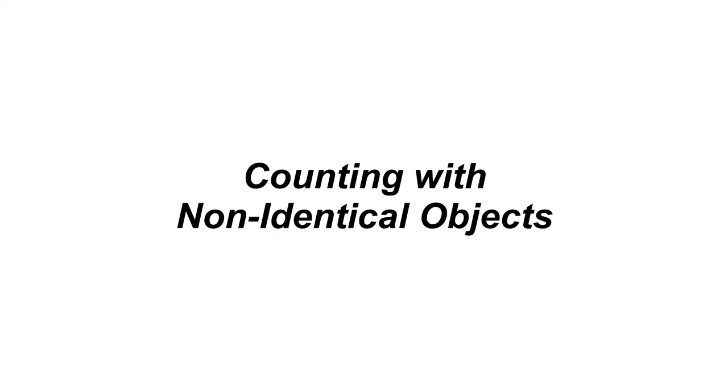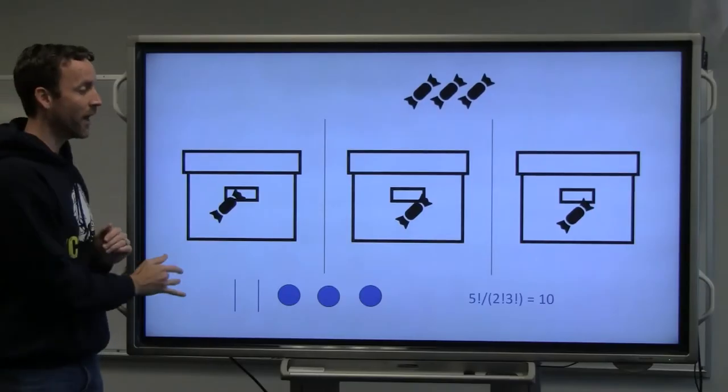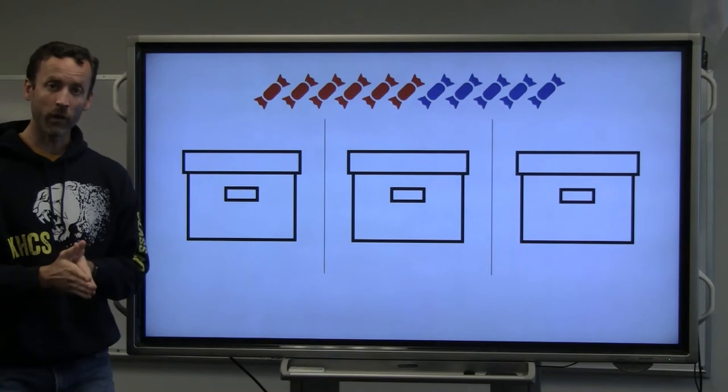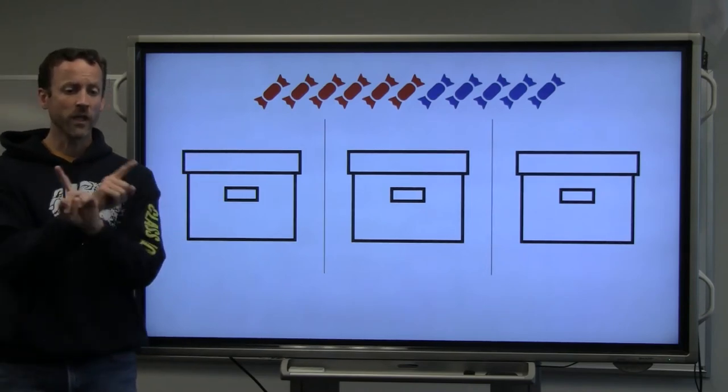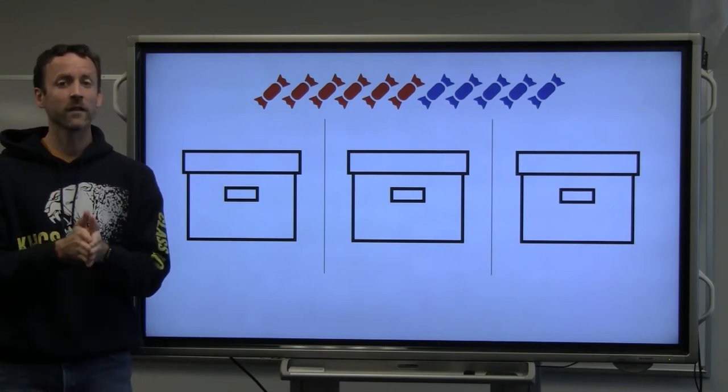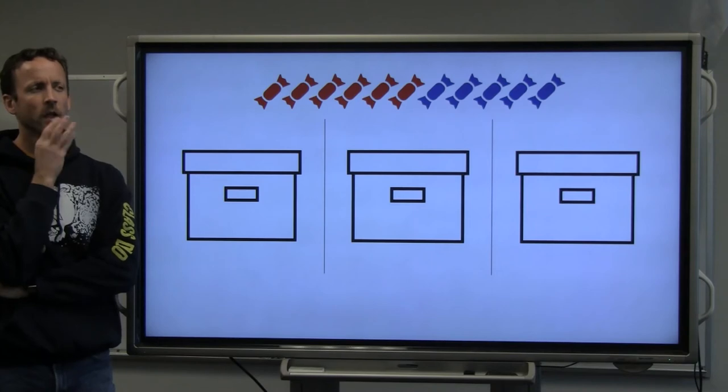Now so far, I've only given you problems that have identical pieces of candy. But what if there are not identical pieces? For example, what if there are six red pieces and five blue? So now switching the red and the blue gives you a different arrangement, right? It's a little more complicated.